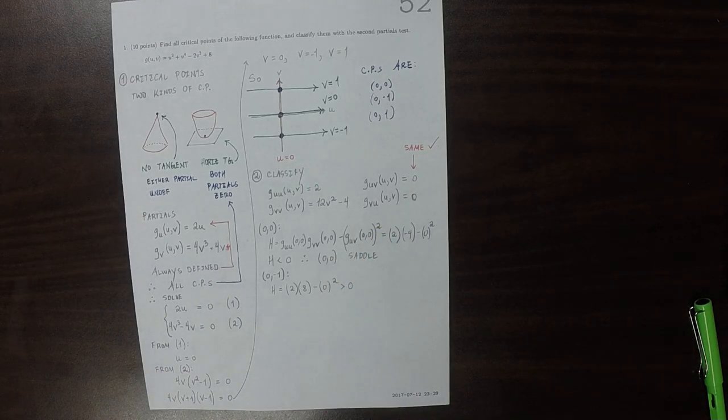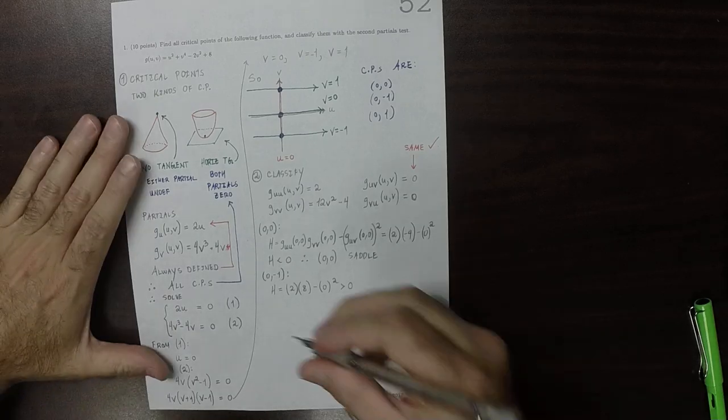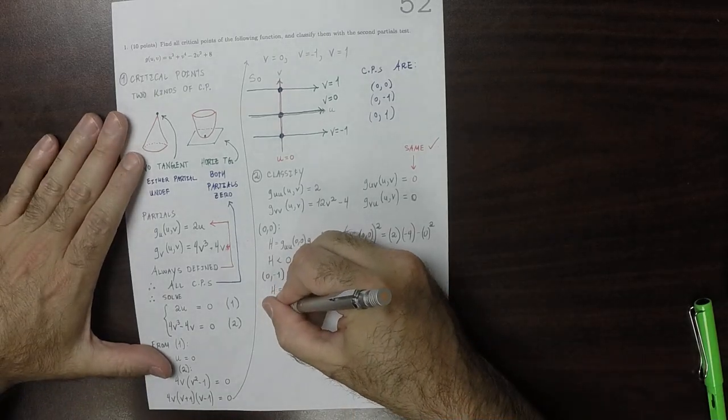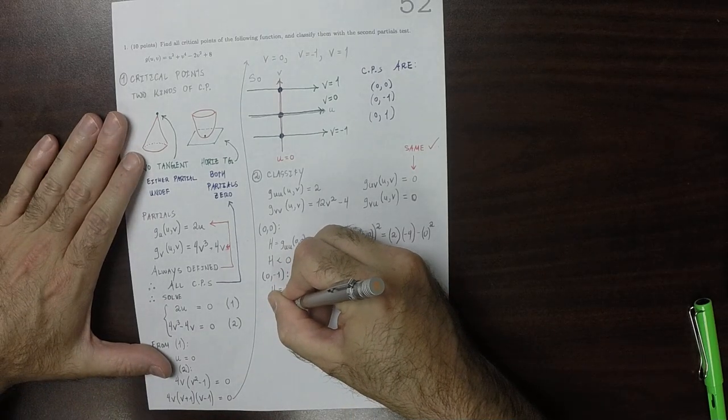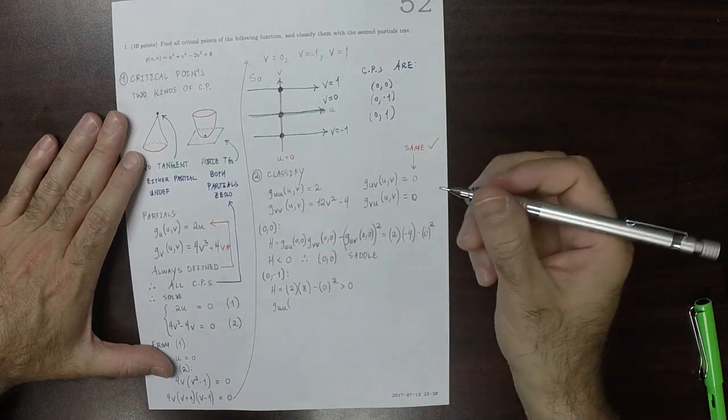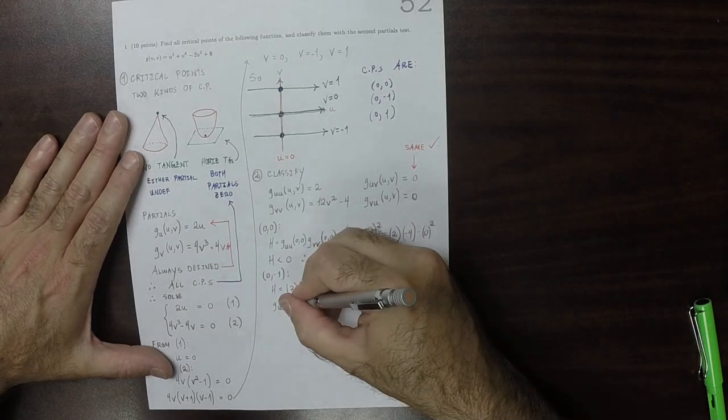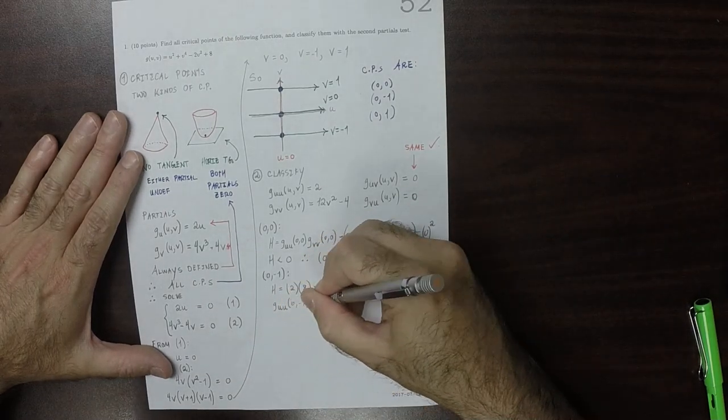That's positive, which means that it is either a min or a max. And furthermore, the U, U partial, either pure partial, at zero, negative one,